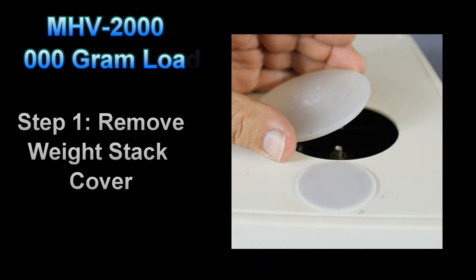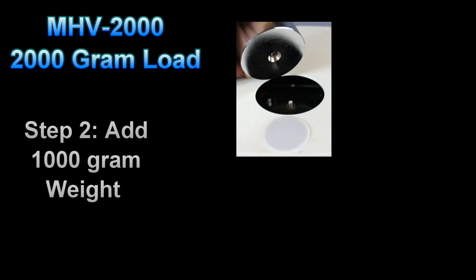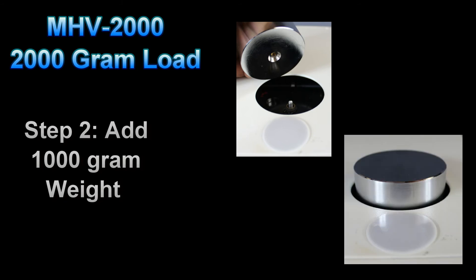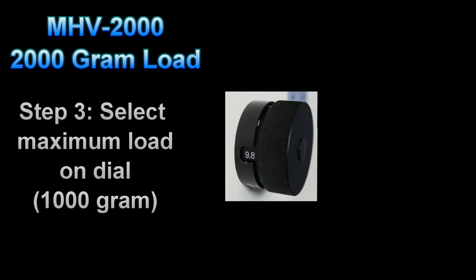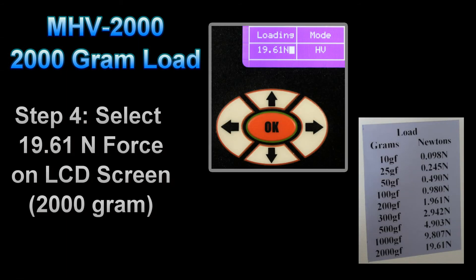To utilize a 2,000 gram load on a MHV-2000, first remove the weight stack cover. Then add the secondary 1,000 gram weight. Adjust the knob to the highest value, which is 1,000 grams. And then change the parameters on the control panel.